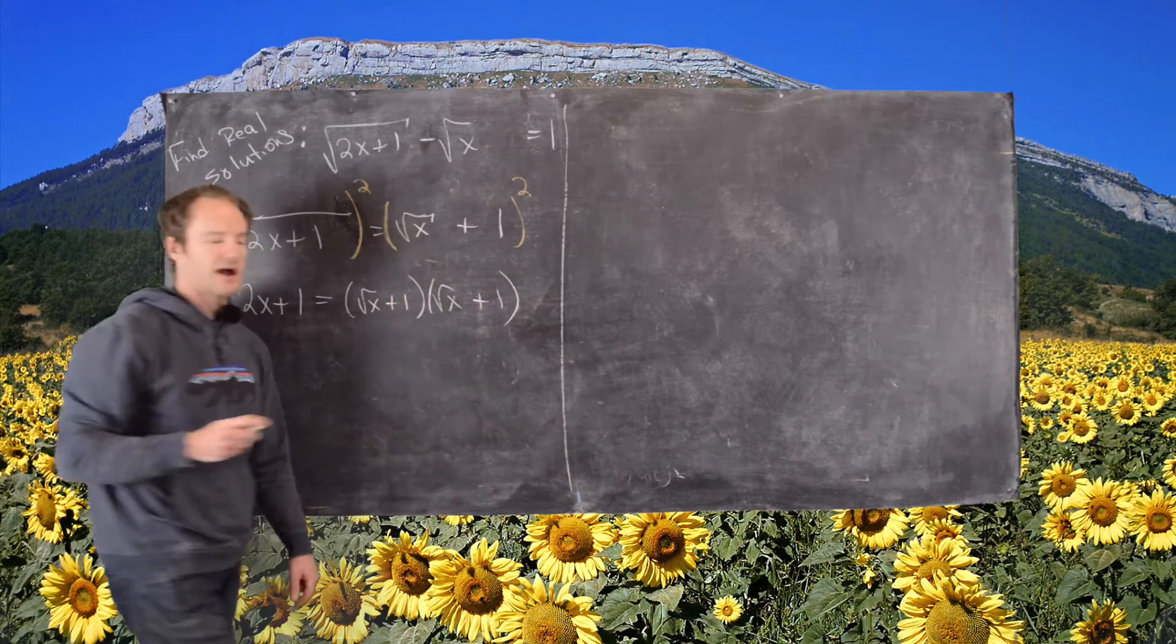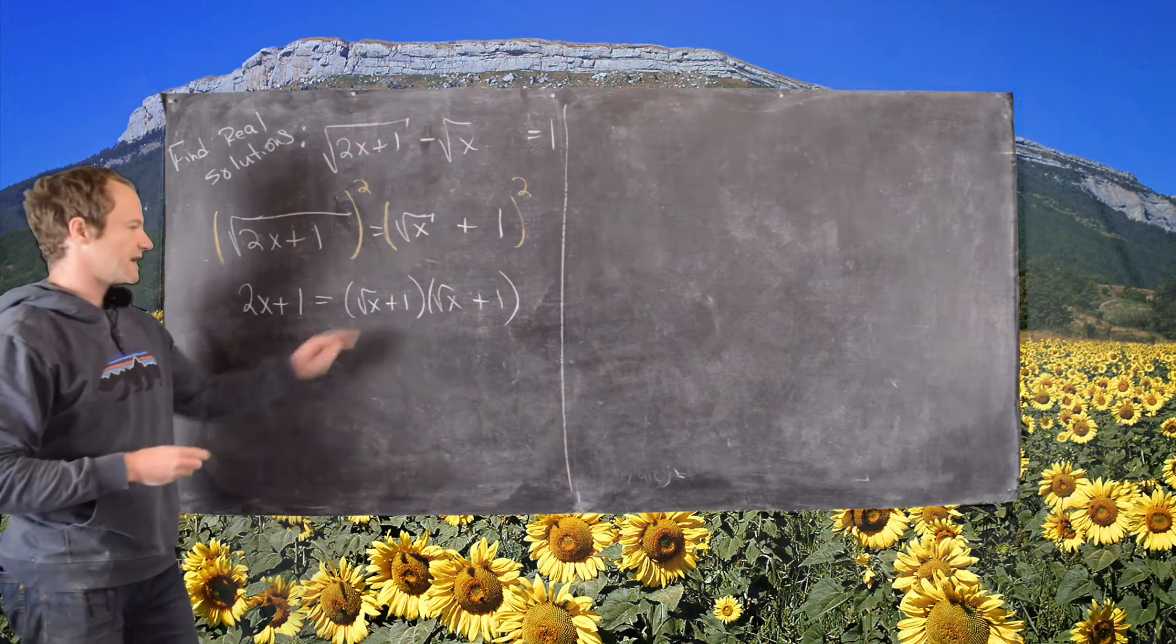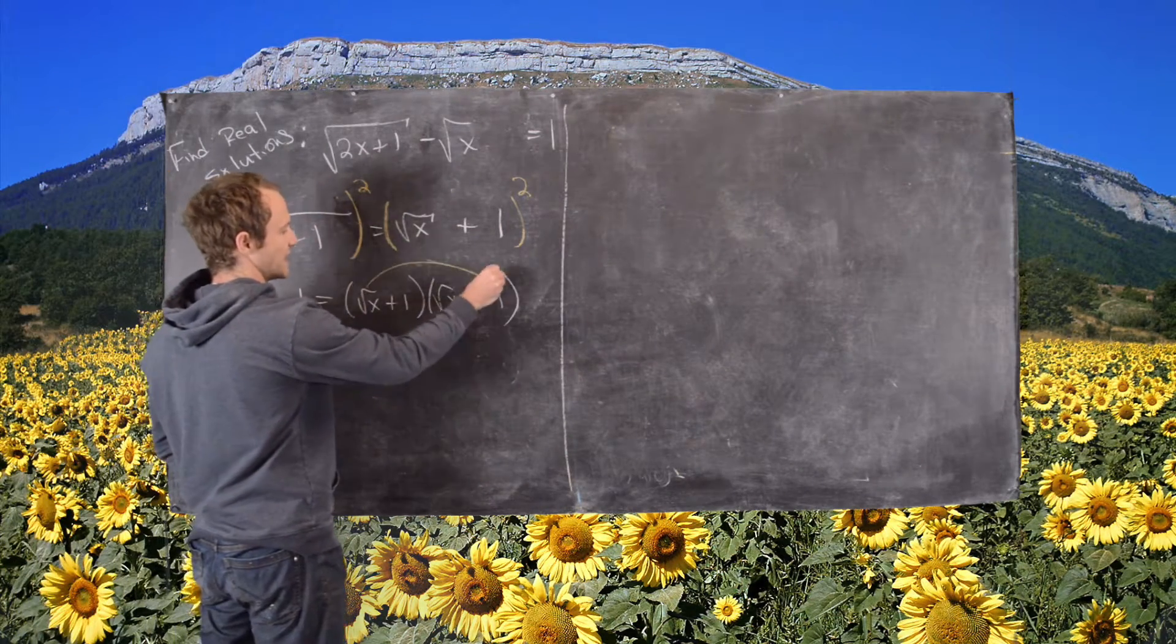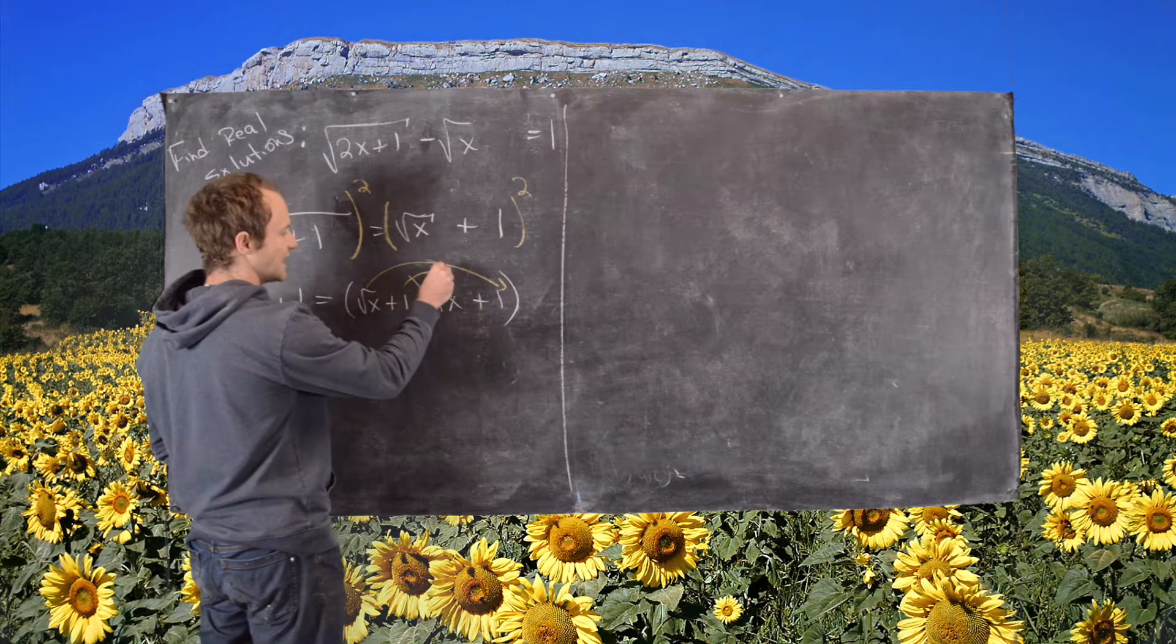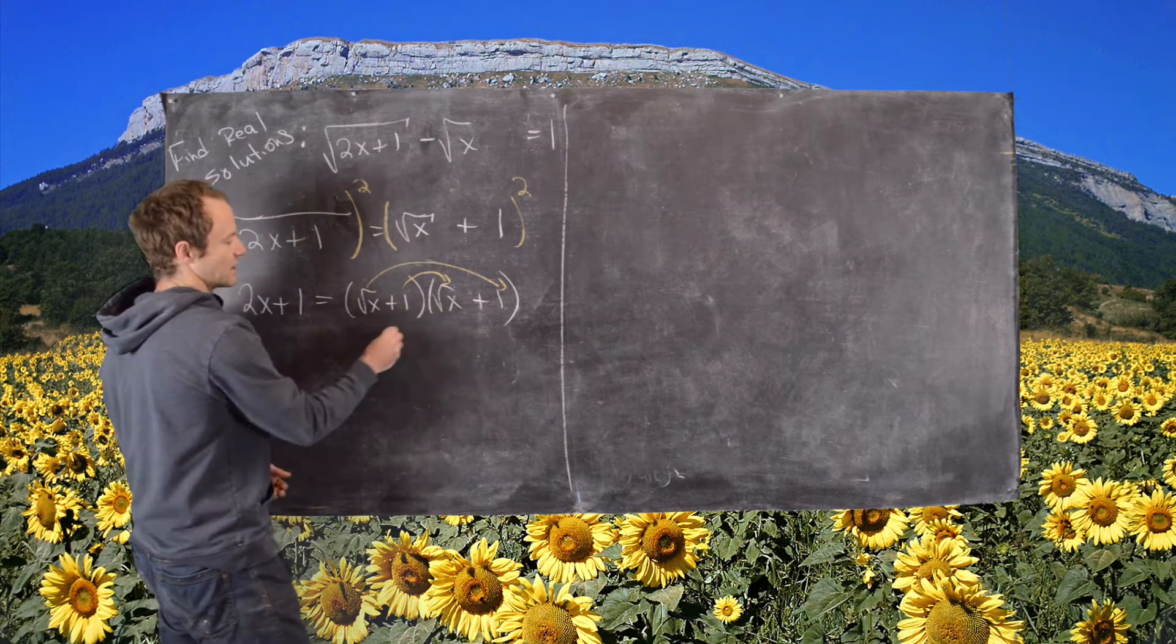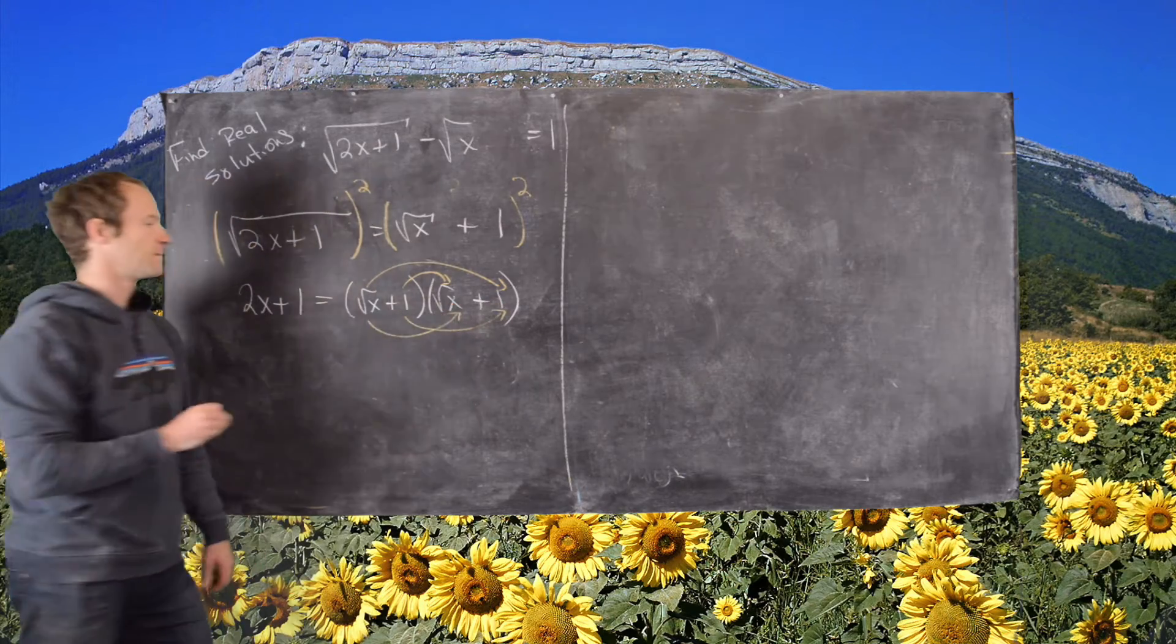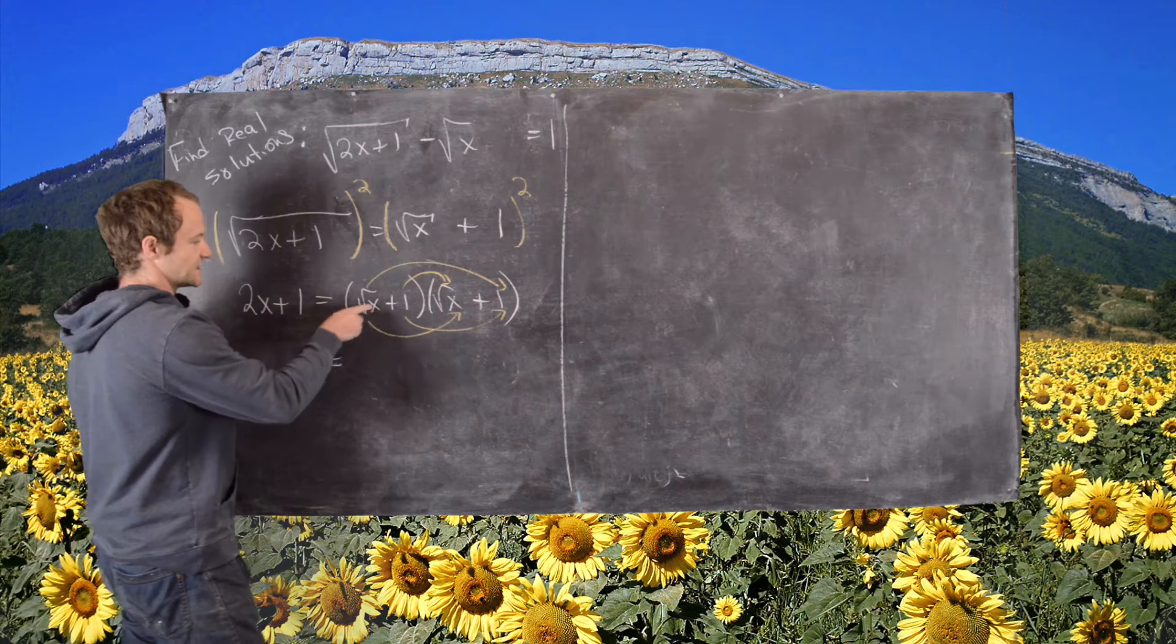I'm using the definition of squaring, and now we have to FOIL this. Notice we need to have square root of x hit 1, we need to have 1 hit the square root of x, and then we also need those to happen. That's going to give us: